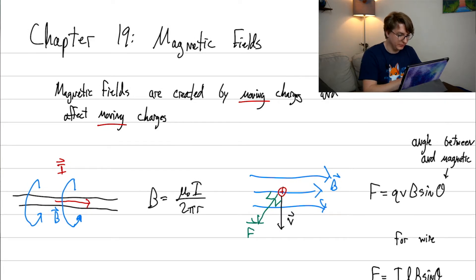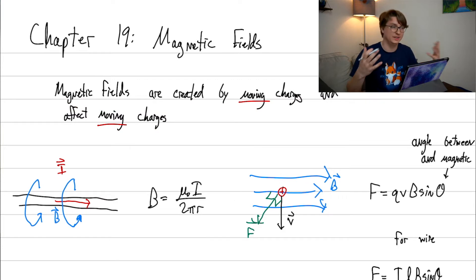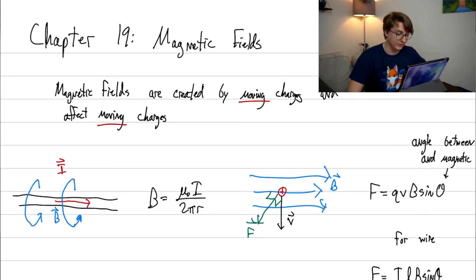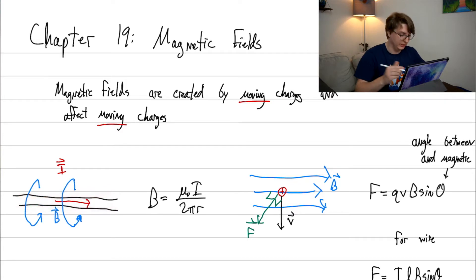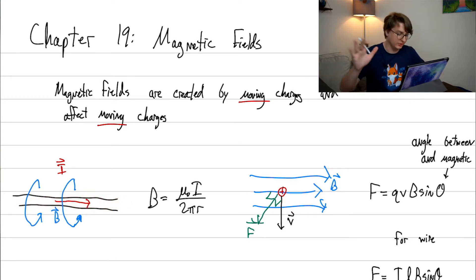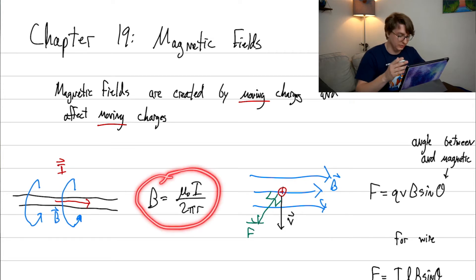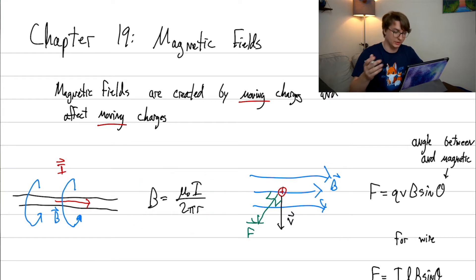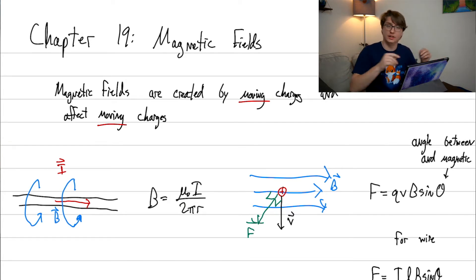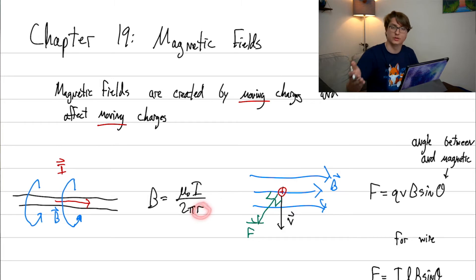Magnetic fields are created by moving charges, and they only affect moving charges — this is a bit different than what we might think about naturally. You can create magnetic fields from moving charges, like a wire with current. Those moving charges create magnetic fields. If you're interested in the magnetic field created by a wire, it's μ₀I over 2πr. Notice the 2πr — this purely has to do with geometry, just like with the electric field from an infinite line charge.